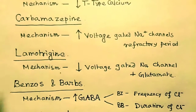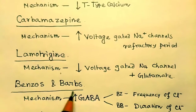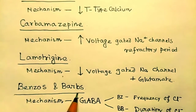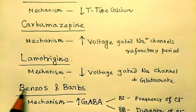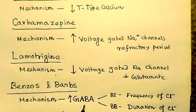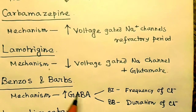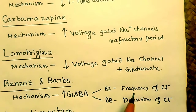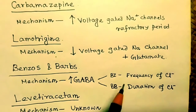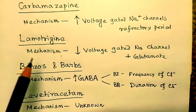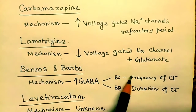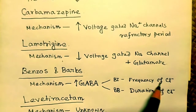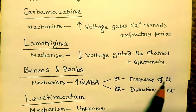The next ones are benzodiazepines and barbiturates — 'benzos and barbs.' Both have a mechanism involving GABA and chloride channels. We also have a separate video on benzodiazepines on our channel — please watch it if you haven't. Benzodiazepines affect the frequency of chloride ion channel opening.